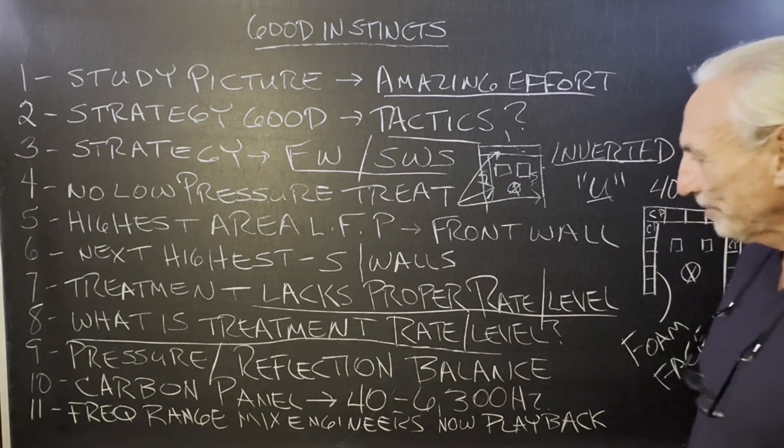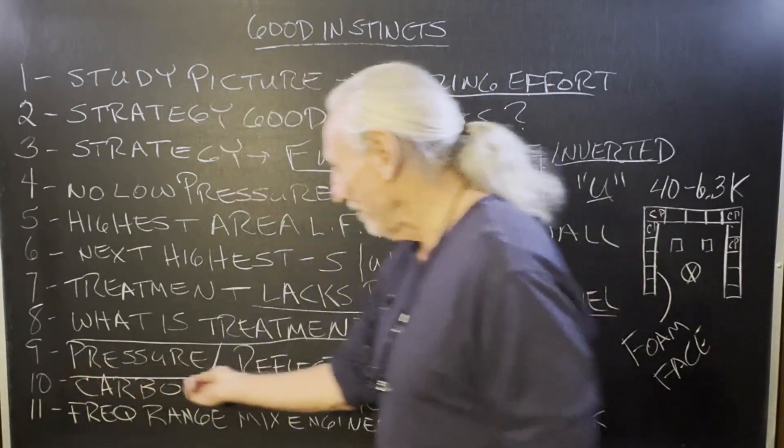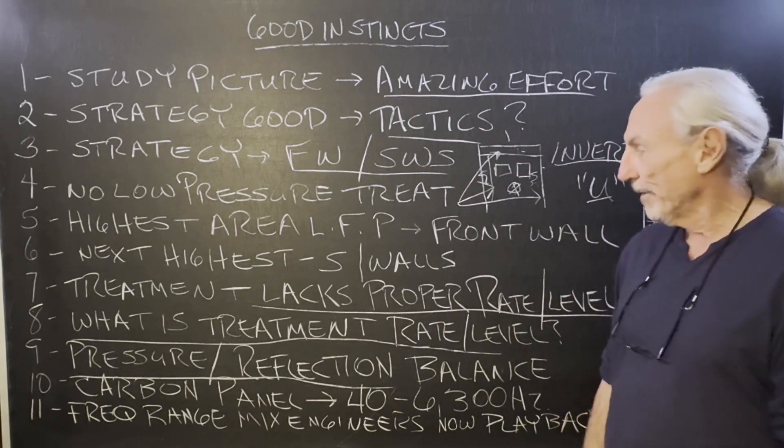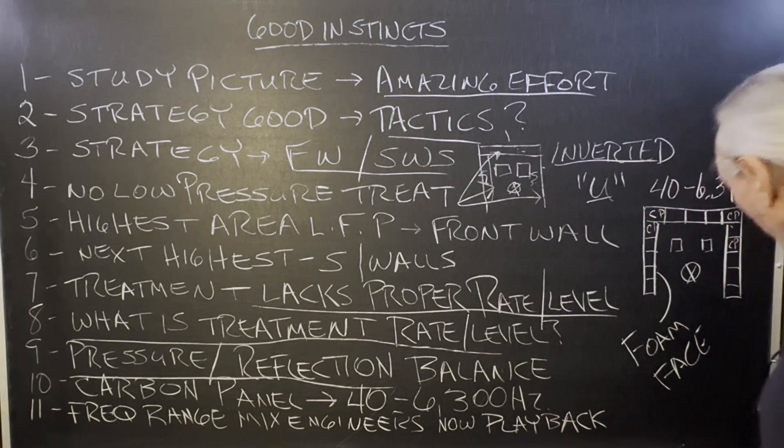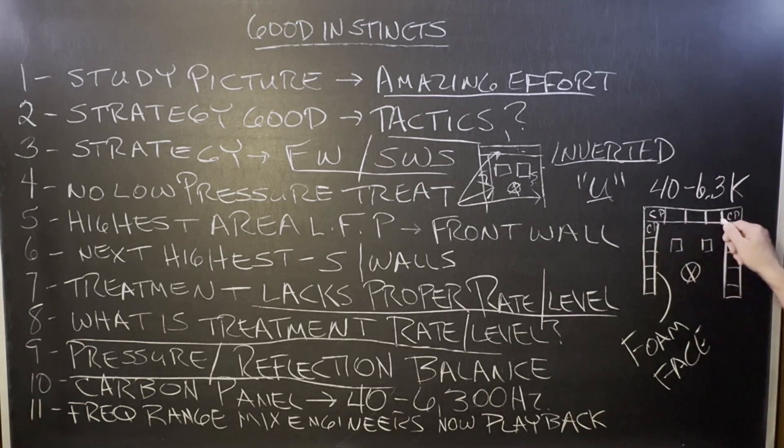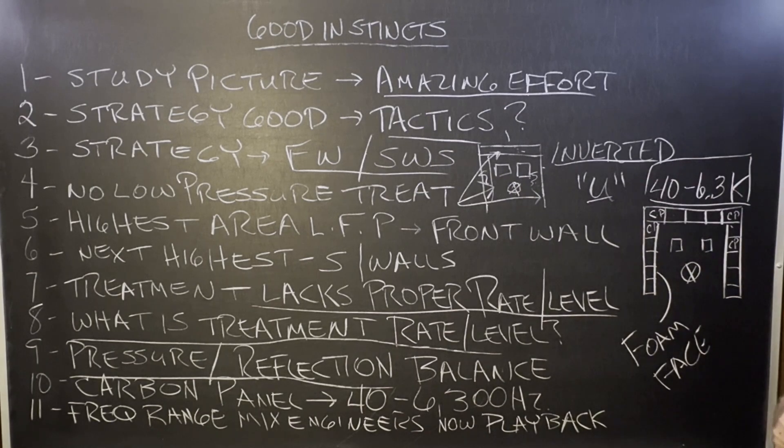What do we got? We know this. We've talked about this forever: pressure and reflections. Let's back up. Here's our inverted U. What did we recommend for this? The carbon panel, because his problem started at 40 hertz. Some rooms start at 30, but this one started at 40.